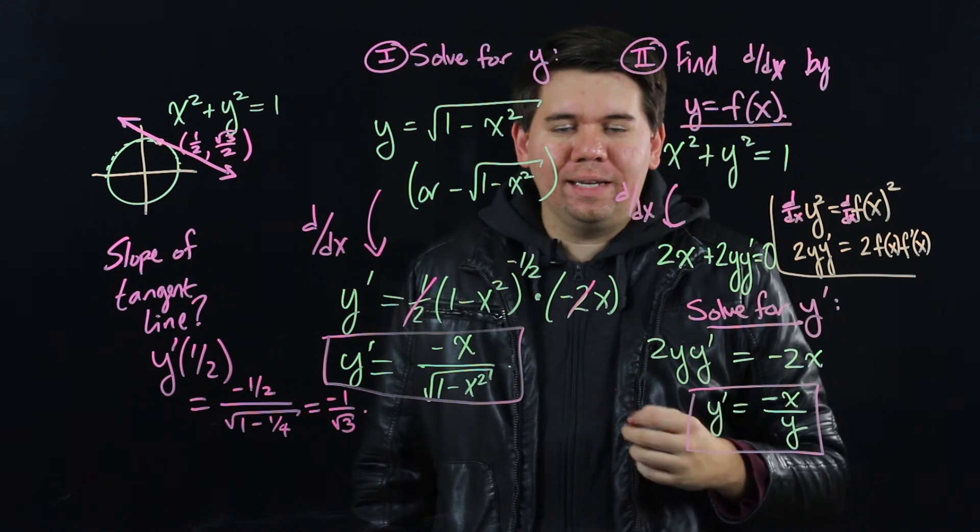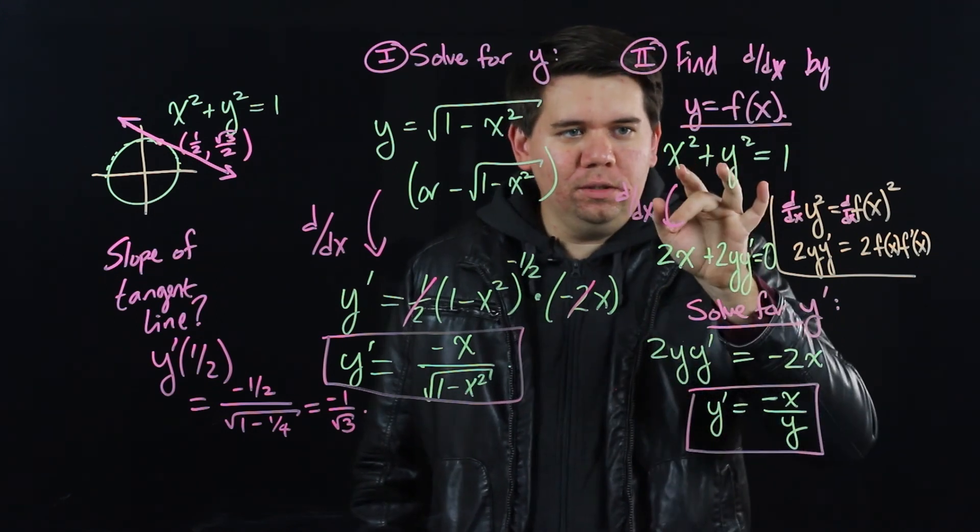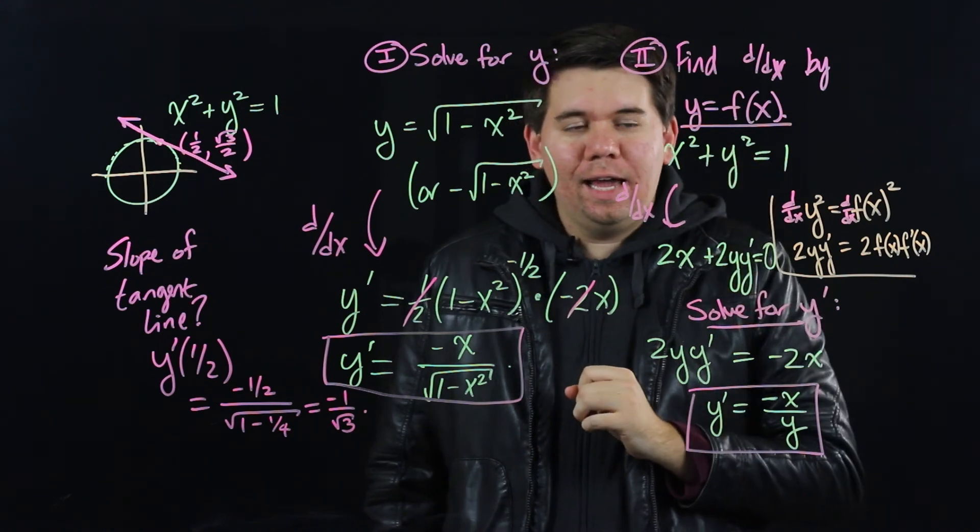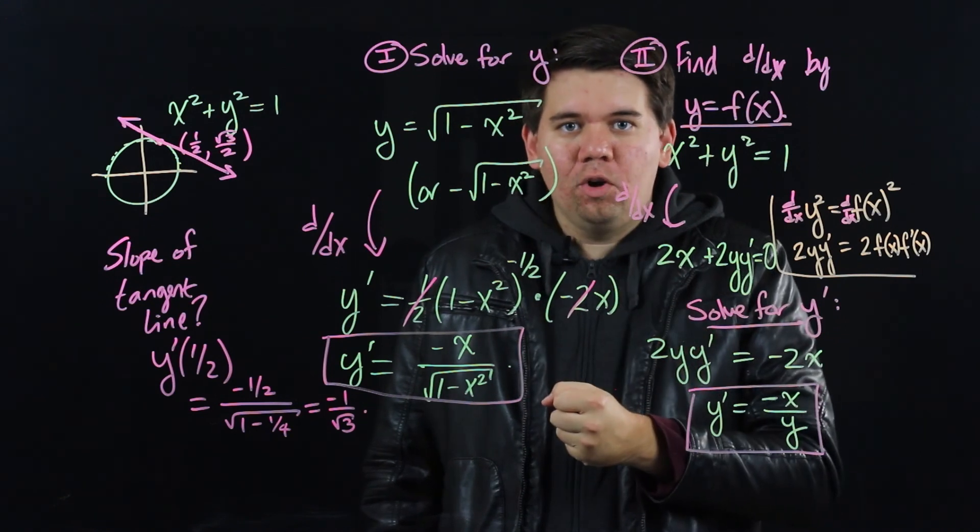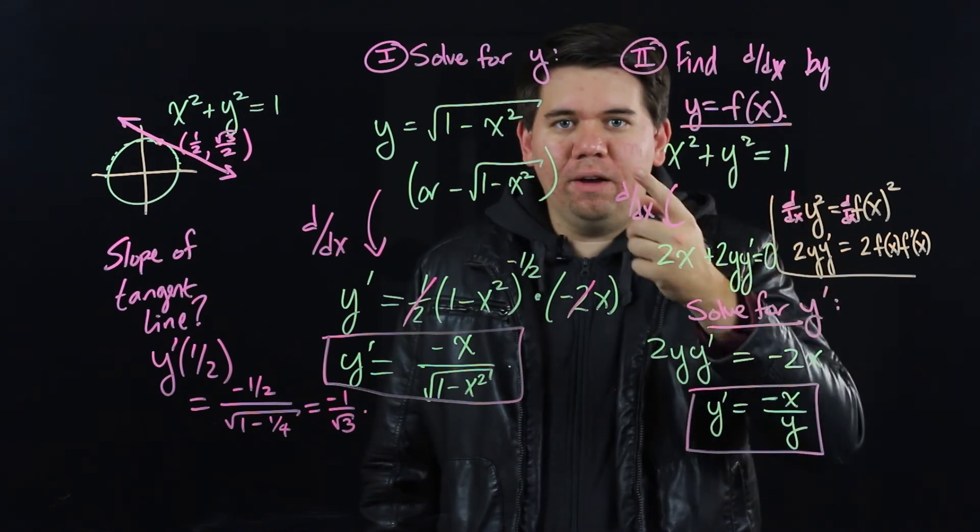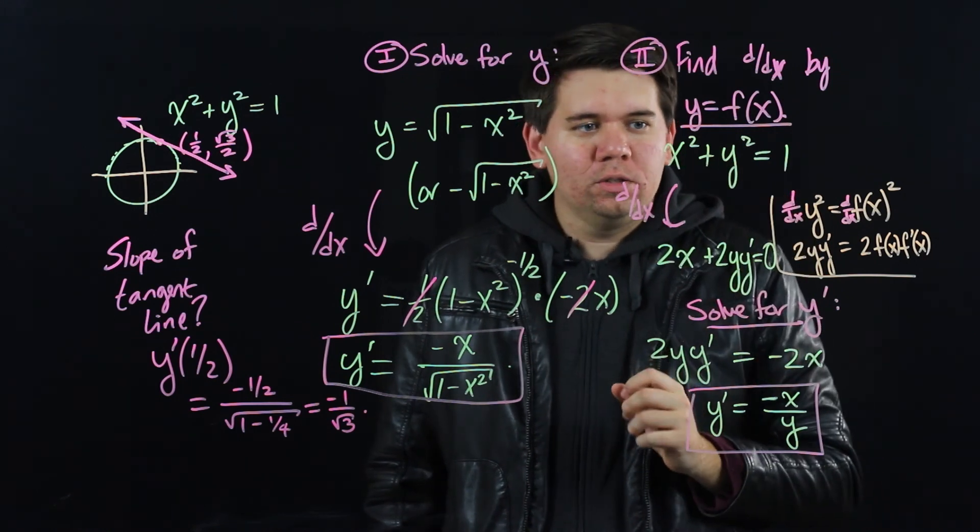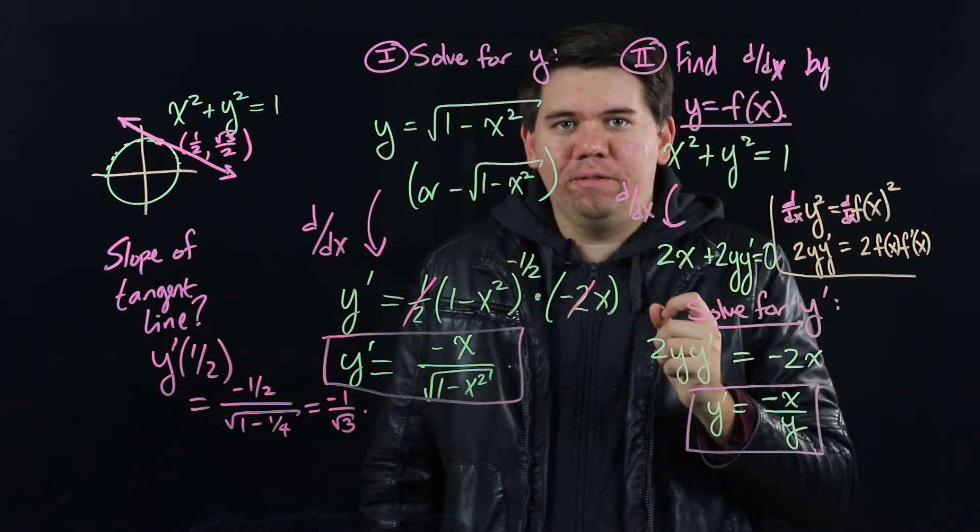This second approach is called implicit differentiation. You start out with some function, an equation that has both x's and y's. And then instead of solving to make it a function of just x, what you do is you just take the derivative of the entire equation, of both sides of it, just treating your y as if it is some function of x.